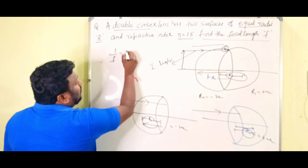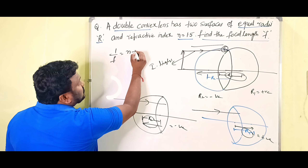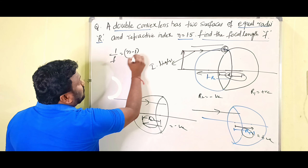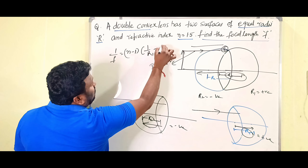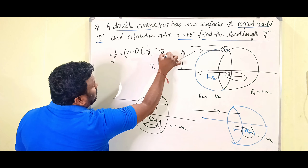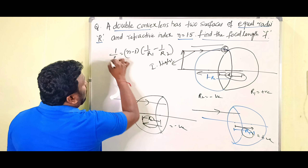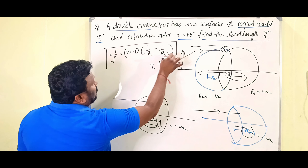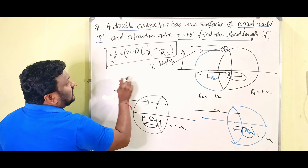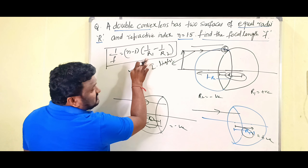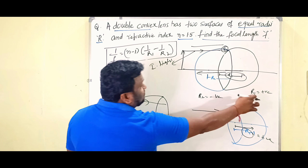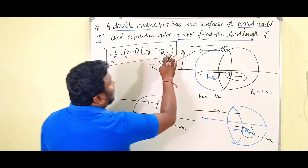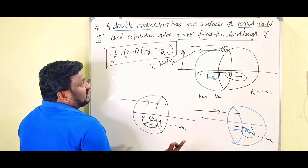In the lens maker formula: 1/f = (n − 1) × (1/r1 − 1/r2). Here r1 is positive and r2 is negative.